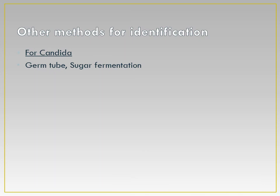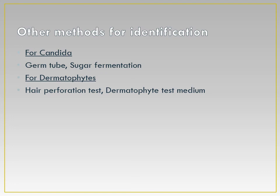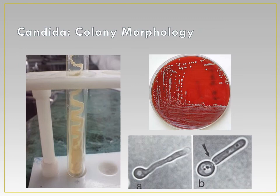Other identification methods include: for Candida, the germ tube test differentiates Candida albicans from other species, along with the sugar fermentation test. For dermatophytes, the hair perforation test and Dermatophyte Test Medium are used. The urease test is done for fungi that produce the urease enzyme, such as Cryptococcus. In the picture of Candida colony morphology, creamy colonies are seen on SDA, whitish-grayish pasty colonies on blood agar, and the germ tube test — A is germ tube positive (Candida albicans) and B is germ tube negative (other Candida species).